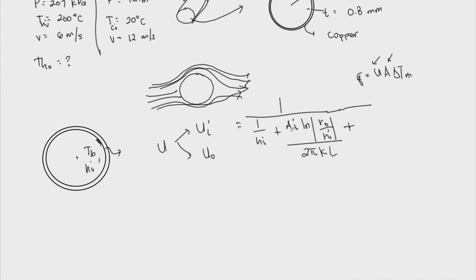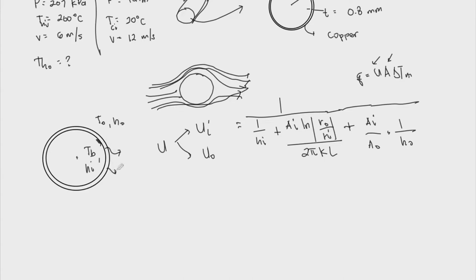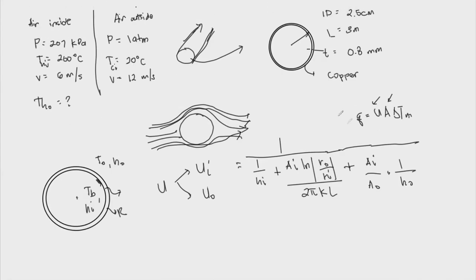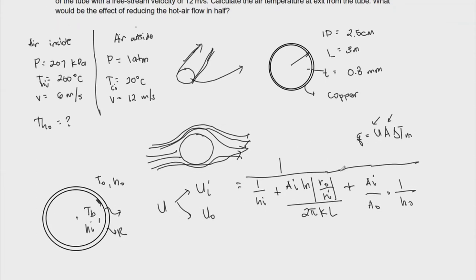On the outside, the fluid experiences HO resistance. That's how our overall U goes — we can compute for U, and this is Ui. If it's Uo instead, we just interchange the area terms accordingly. Those are our expressions for U, so it can be obtained. The next question is: what is ΔT? And of course, what is Q?